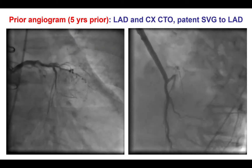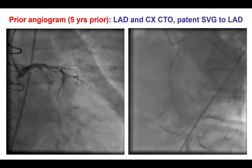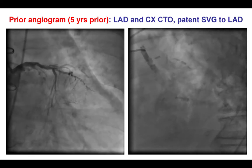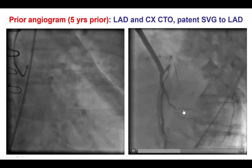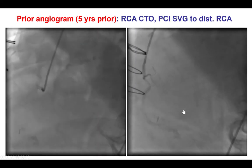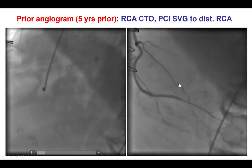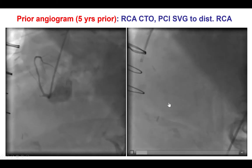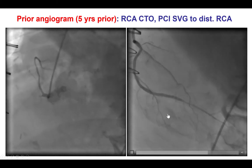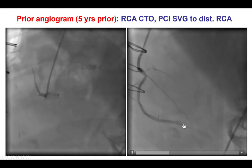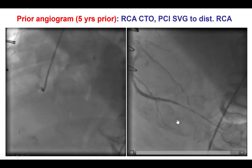In her previous angiogram, the circumflex and the LAD were occluded. However, the vein graft to LAD was patent and the RCA was occluded. There was a lesion distal to the vein graft to the right touchdown which was successfully stented with one drug-eluting stent.